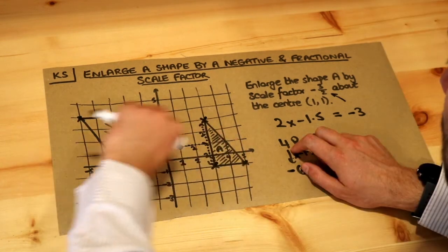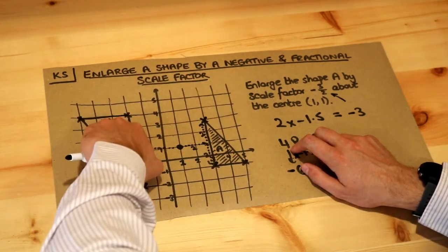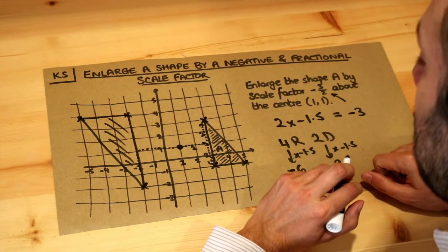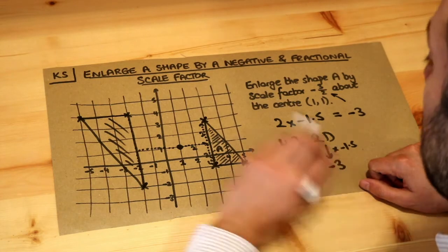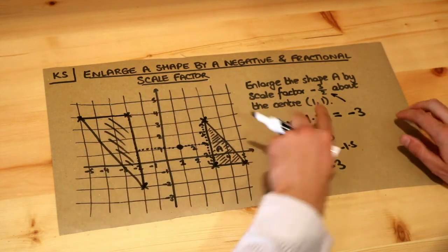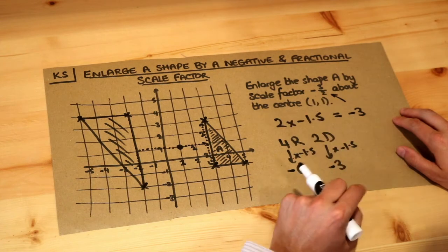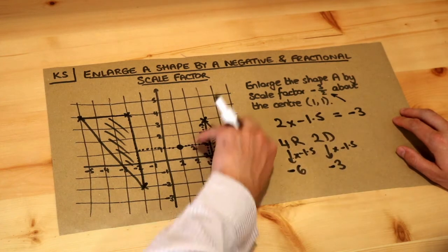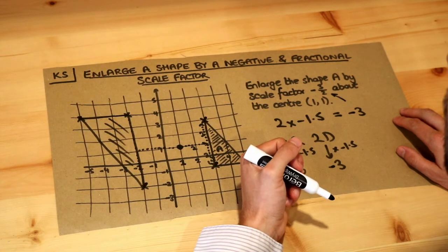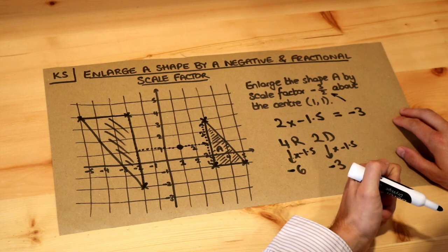You can see the shape has flipped over — it's rotated 180 degrees — but it's also become bigger at the same time. It might have got smaller if we had, say, a scale factor of minus a half: it would still flip over but also get smaller at the same time.